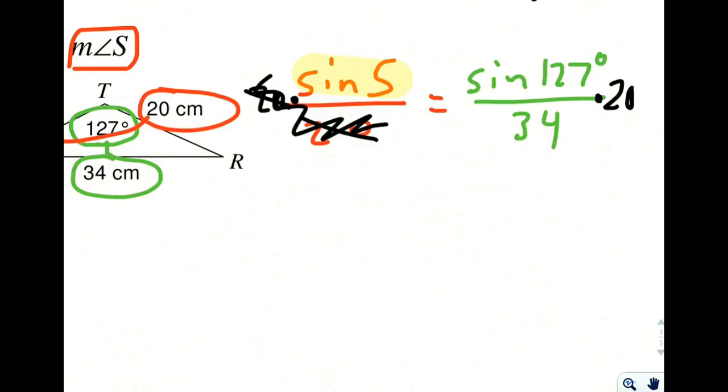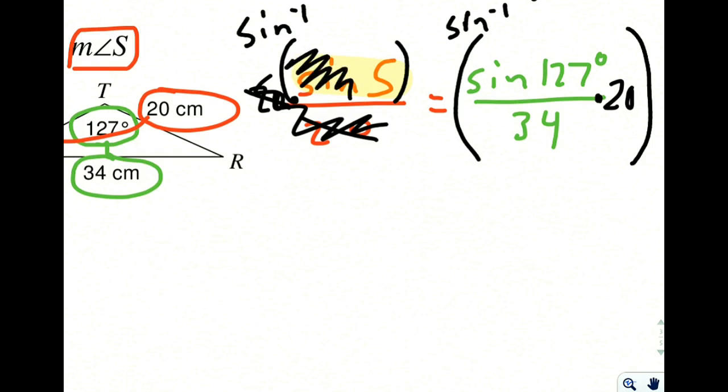Now, to undo a sine, you need to take an inverse sine. So we would need to take the entirety of both sides and take the sine inverse of both sides. The sine inverse and the sine over here are going to cancel each other out. It's like multiplication and division. They undo each other. So we're just left with angle S on the left, which is what we want.